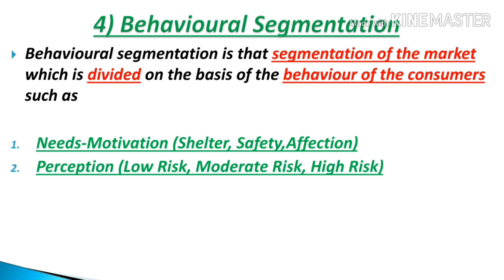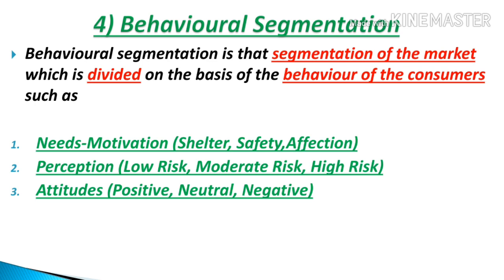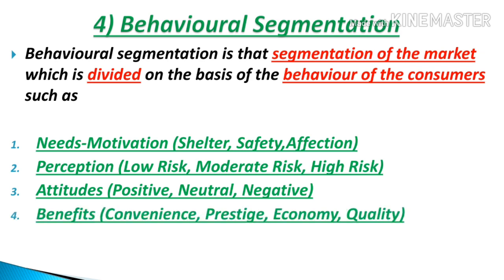The second factor is perception — whether a consumer judges a decision as low risk or high risk. This plays an important role in determining individual behavior. The third factor is attitude — whether the consumer's behavior is positive or negative toward a product. The fourth factor is consumer benefits — what benefit does the consumer prioritize, whether it is convenience, prestige, or economy — these are all important factors in behavioral segmentation.